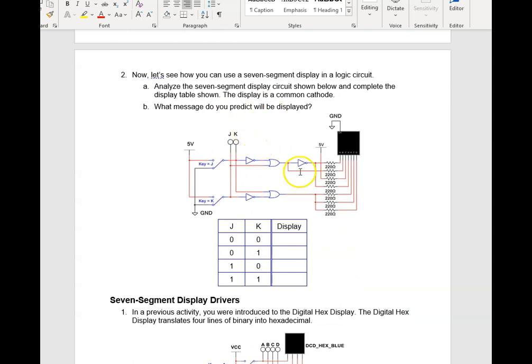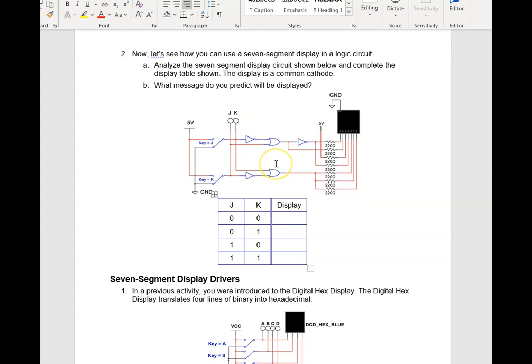Here, they've got you building a little circuit. It says, let's see how you can use the seven segment display in the logic circuit. Analyze it. What message do you think? You don't need to build this in Multisim to figure it out. If you remember, kind of tracing to create expressions, logic expressions, to kind of tracing the J and the K through, going through an inverter, becoming not J, K, etc. See if you can't kind of figure that one out.